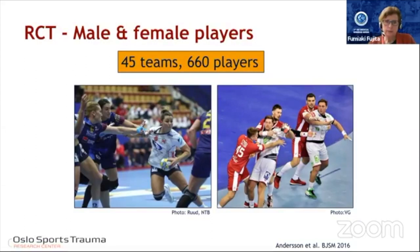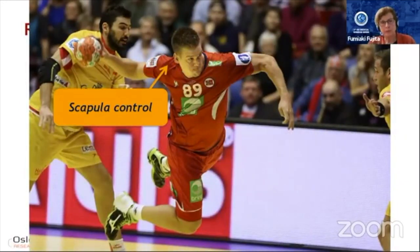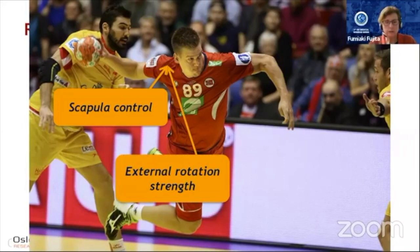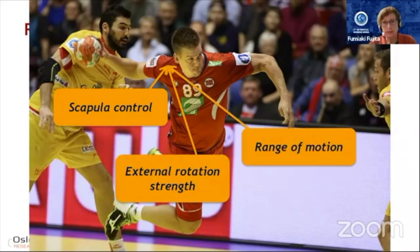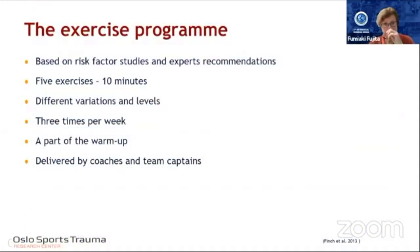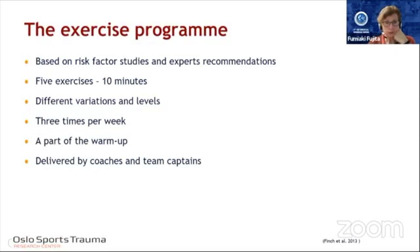We performed a randomised controlled study with male and female handball players — 45 teams and 660 players. We developed an exercise program based on risk factor studies and expert recommendations, targeting scapula control, external rotation strength, and shoulder range of motion. Five exercises designed to take around 10 minutes, with different variations and progression levels. The program should be performed three times per week as part of the warm-up, led by coaches and team captains. Exercises included scapula and core exercises, external rotation strength training, internal rotation range-of-motion stretching, and kinetic chain and thoracic mobility exercises.